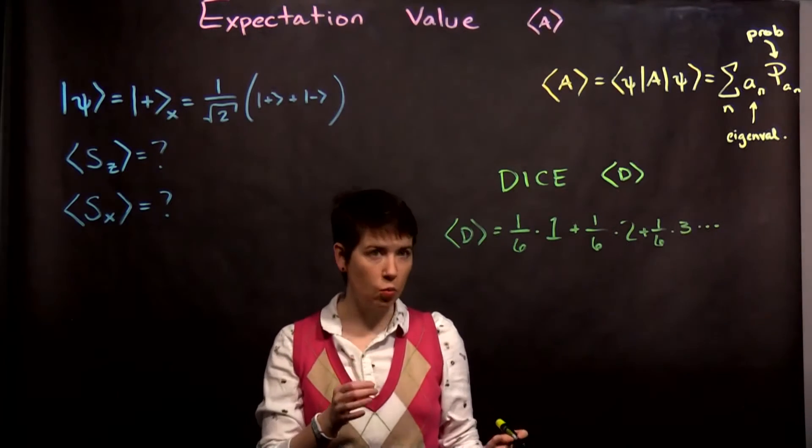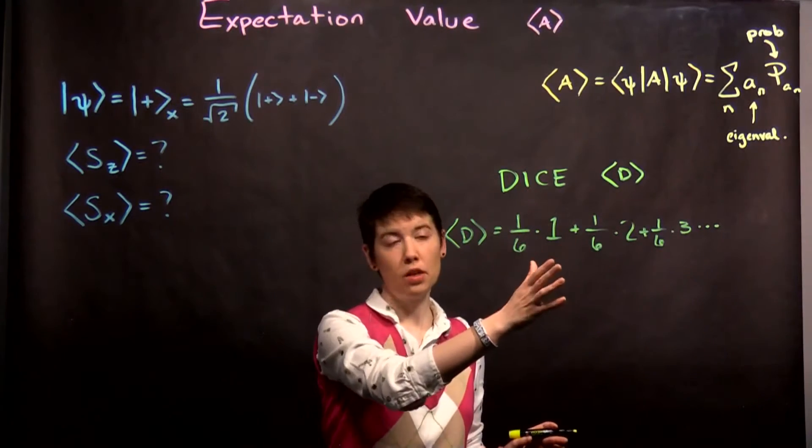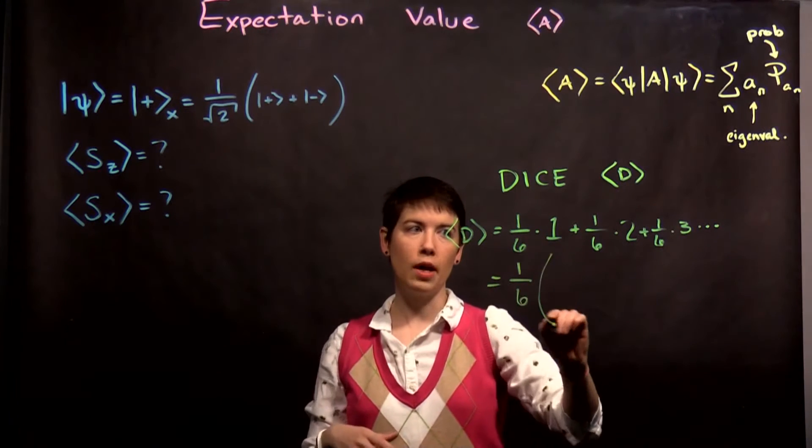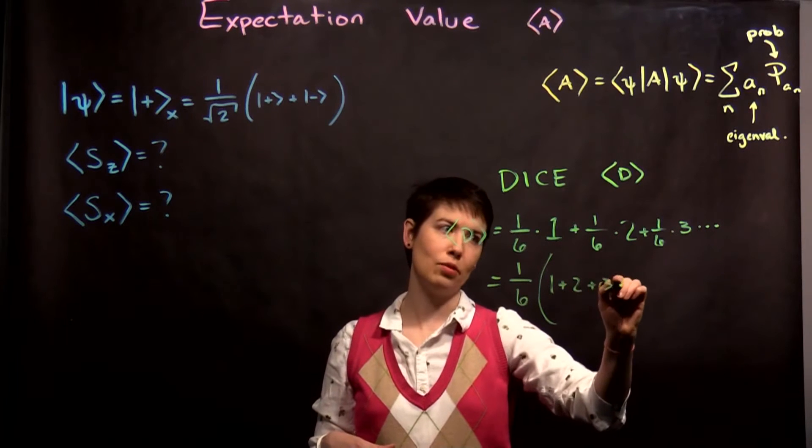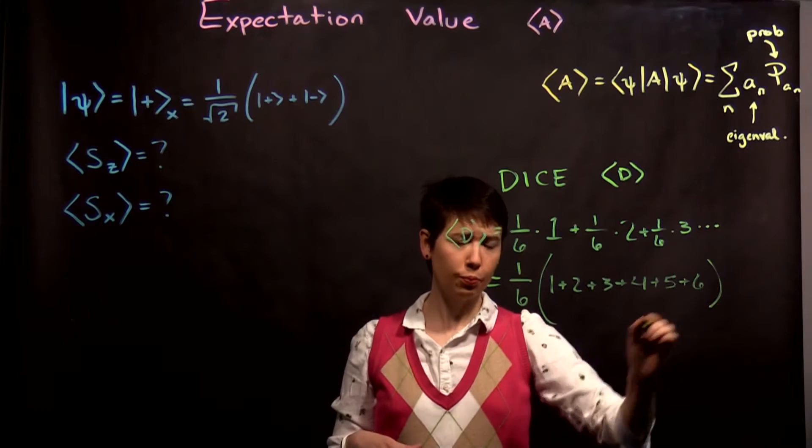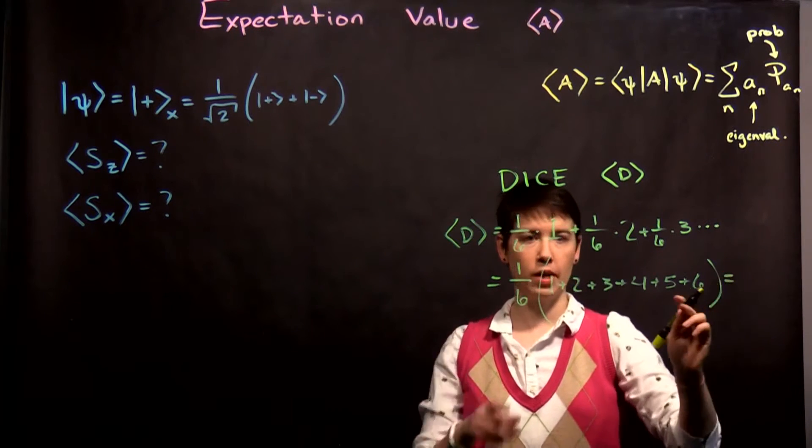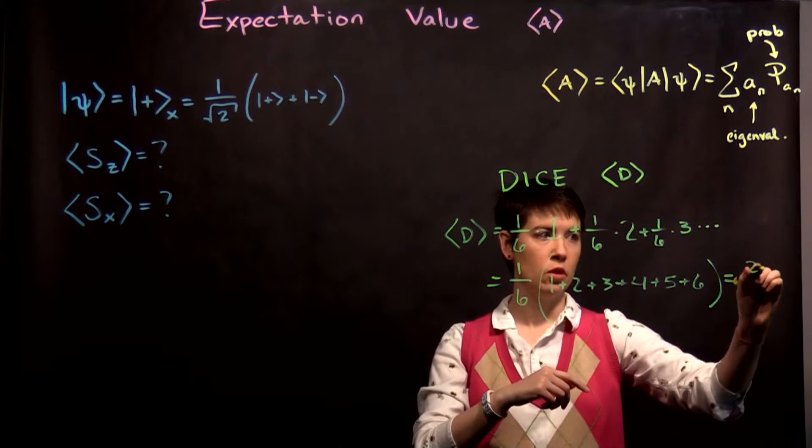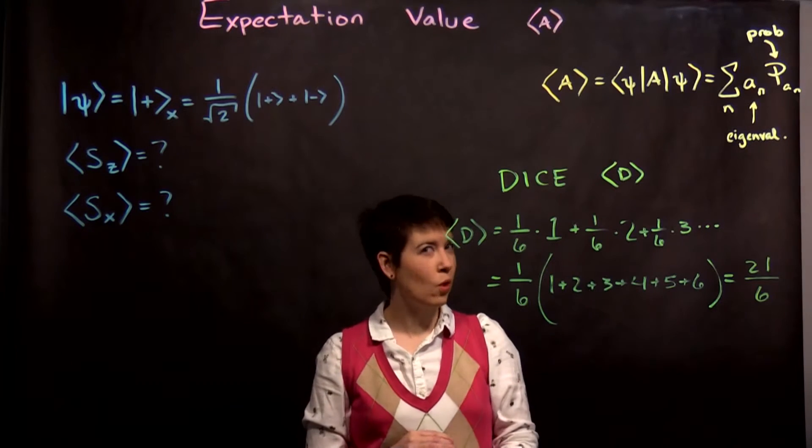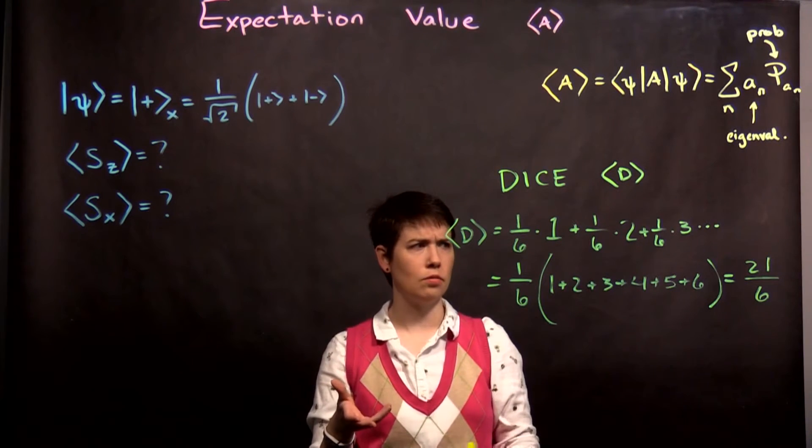In this case, because each one has the same probability of 1/6, we can pull out that 1/6, and it's then 1 plus 2 plus 3 plus 4 plus 5 plus 6. So when I simplify that down, that's 7 plus 7 plus 7 is 21, so 21 divided by 6.